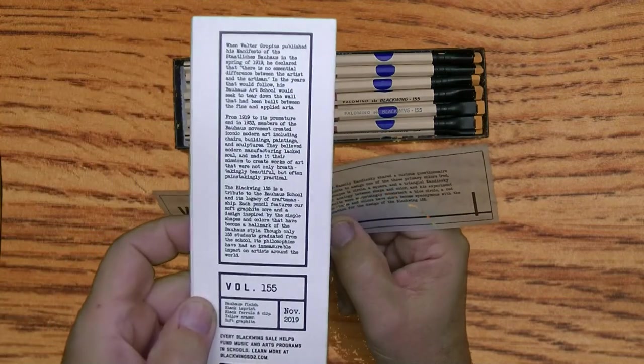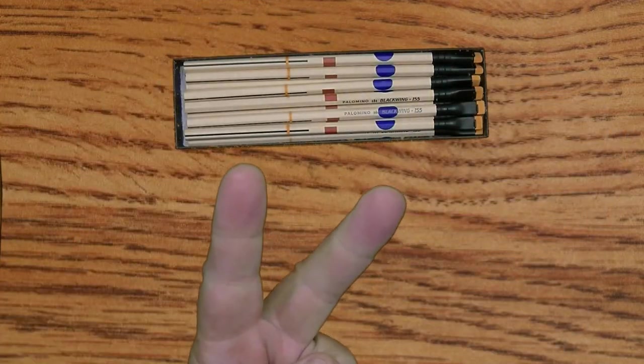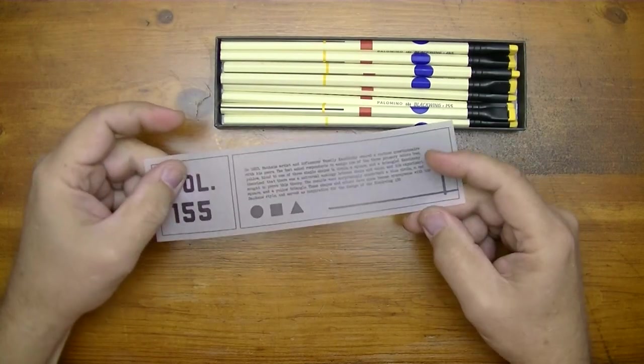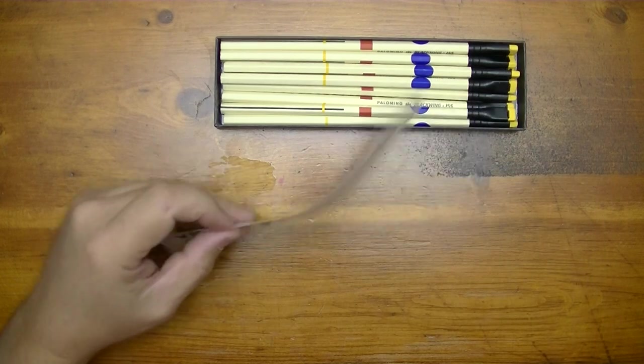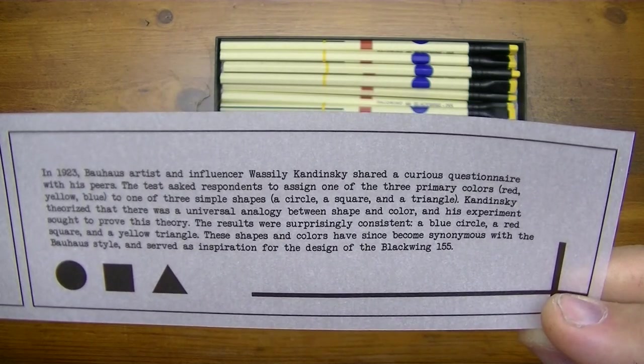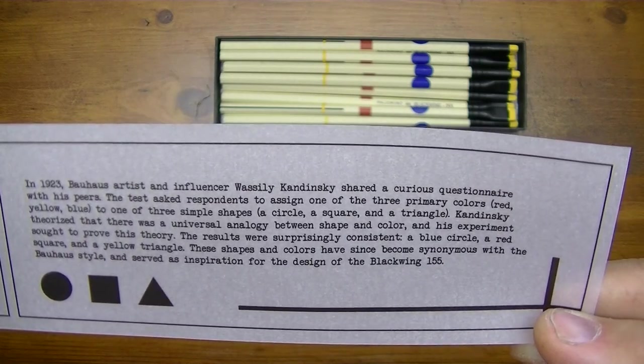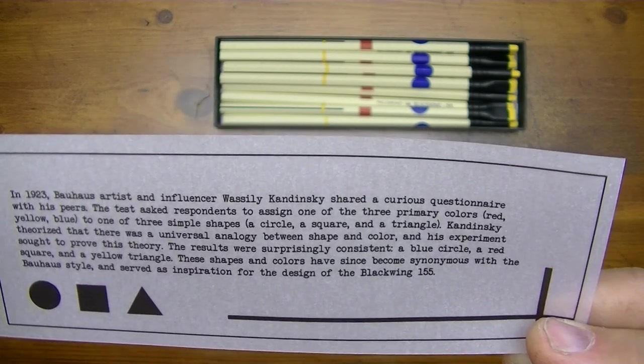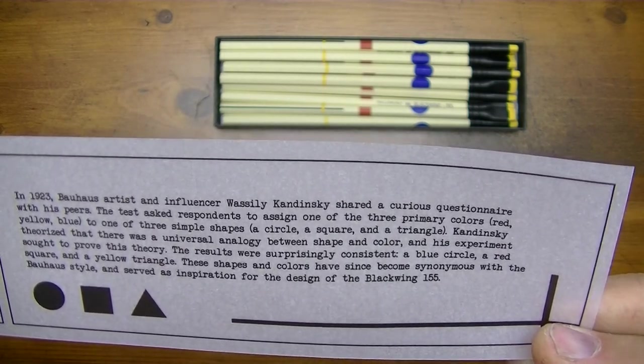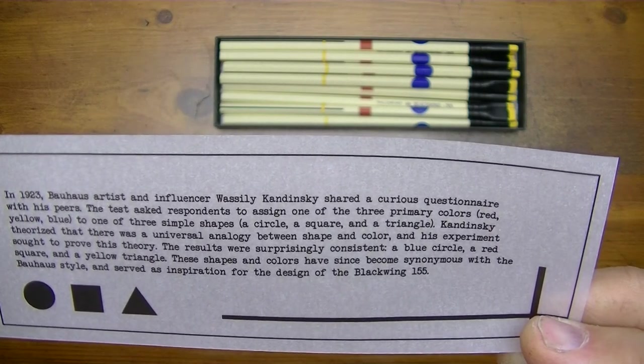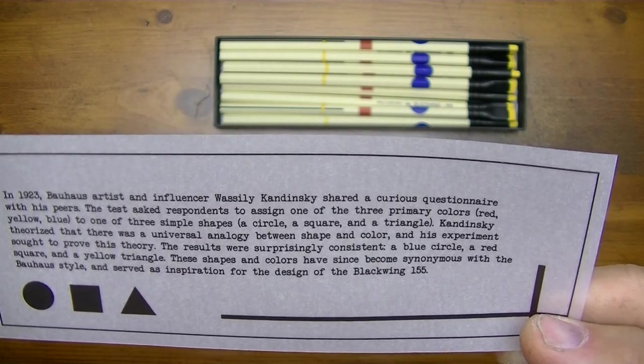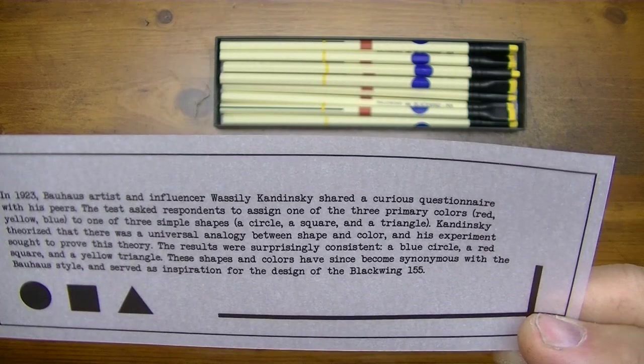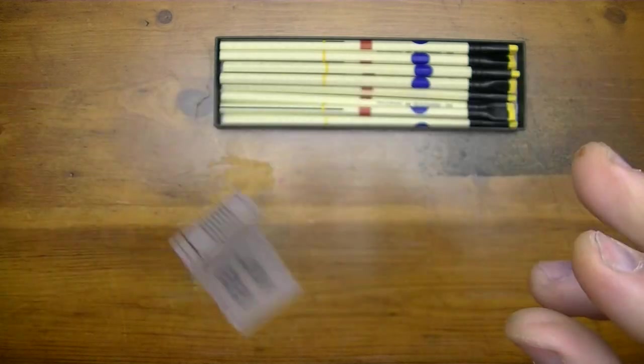That is pretty much back here, that's why I said I would just go ahead and read this and not this so we wouldn't have to do it twice. All right, so here's what it says: In 1923, Bauhaus artist and influencer Wassily Kandinsky shared a curious questionnaire with his peers. The test asked respondents to assign one of the three primary colors—red, yellow, blue—to one of three simple shapes: a circle, a square, and a triangle. Kandinsky theorized that there was a universal analogy between shape and color, and his experiment sought to prove this theory. The results were surprisingly consistent: a blue circle, a red square, and a yellow triangle. These shapes and colors have since become synonymous with the Bauhaus style and served as inspiration for the design of the Blackwing 155.